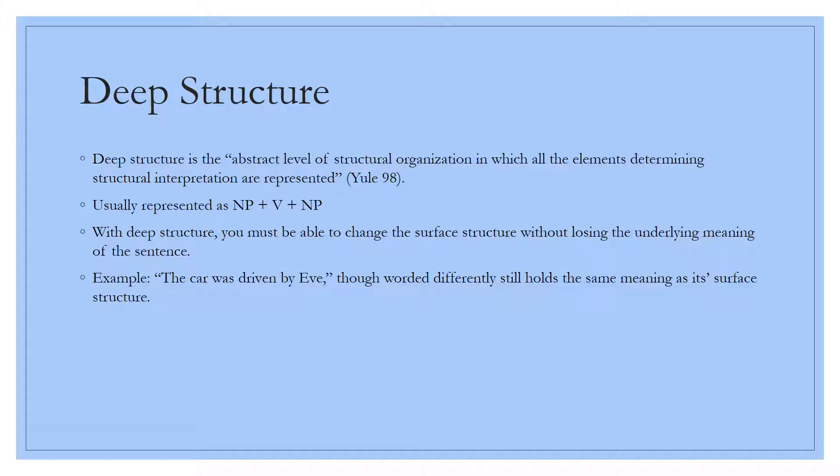Deep structure is the abstract level of structural organization in which all the elements determining structural interpretation are represented. Usually these sentences are represented as a noun phrase plus a verb and another noun phrase. With deep structure, you must change the surface structure without losing the underlying meaning of the sentence. So the car was driven by Eve and Eve was driving the car, they still have the same deep structure, but they have different surface structure.